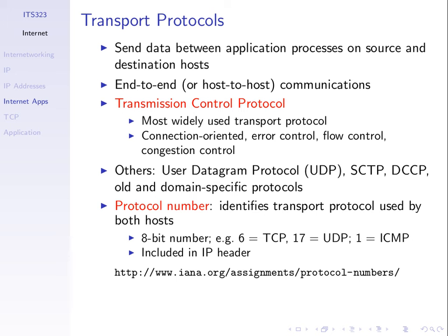TCP is very important because it provides error control — if we send data, it will handle retransmissions. It provides flow control so that if we send data too fast, it will slow down so we don't overflow the receiver. And related to that, congestion control — if we send data too fast, we don't want to overflow the routers in the internet and cause congestion. Many applications use it because of these error control features instead of having to implement their own. There are others though — one common one is UDP, which doesn't provide error control, flow control, or congestion control; it pretty much does the same as IP.